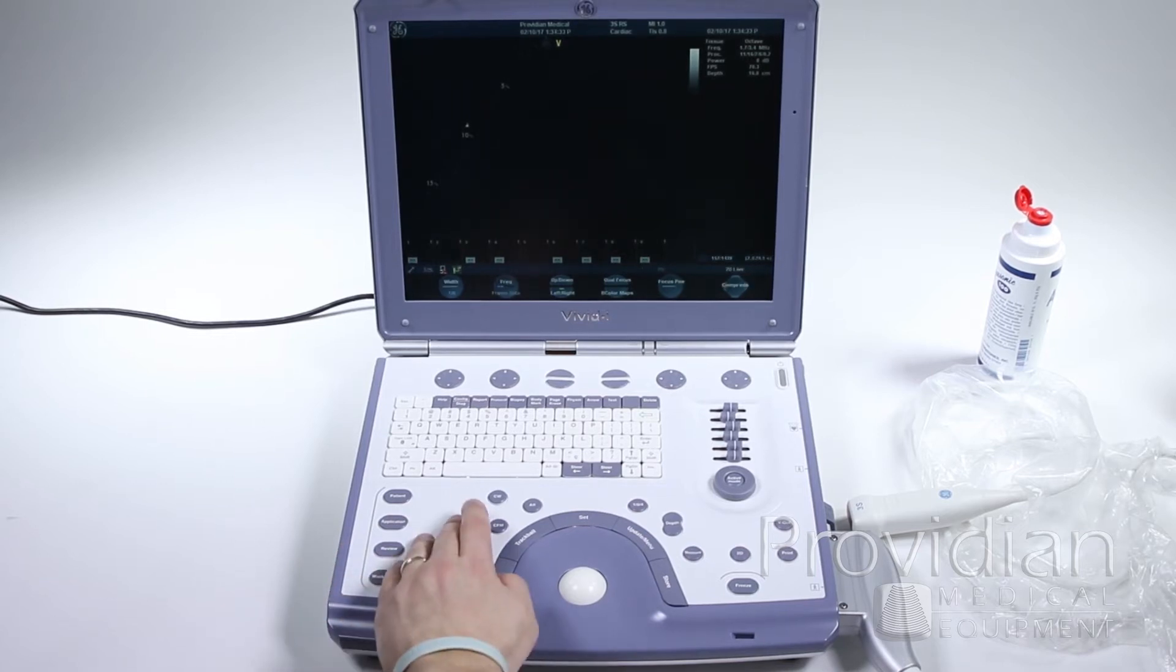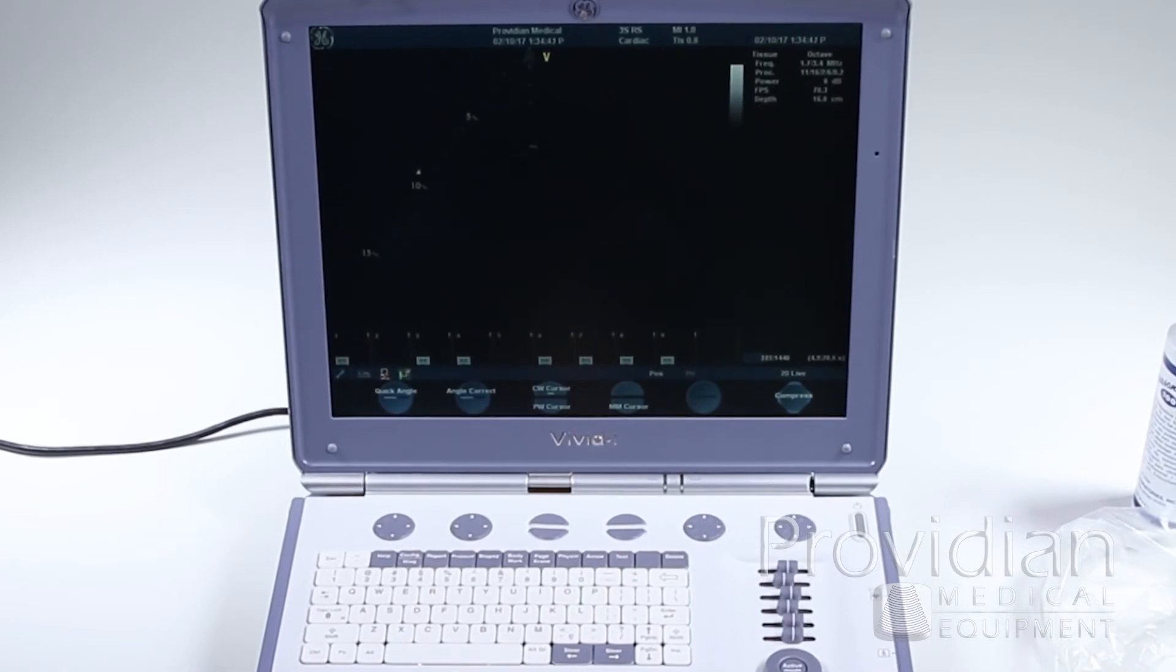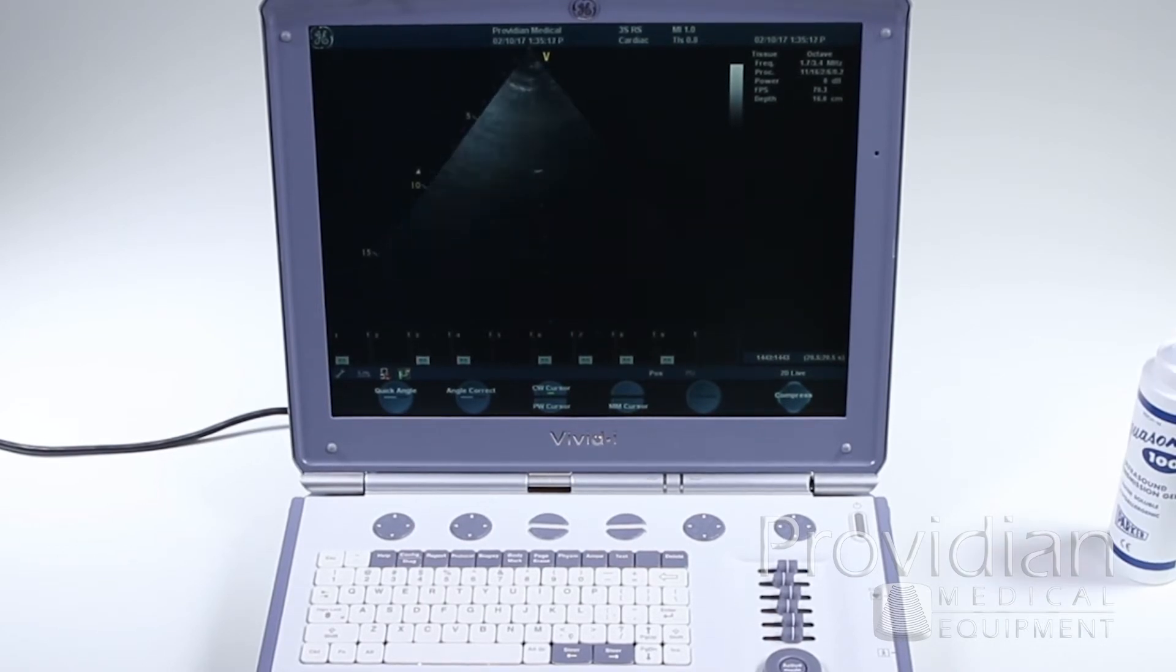A lot of times, instead of hitting pulse wave and then getting the gate and going to that image and going back to 2D, you can click your cursor here. So for M-Mode, PW, or CW Doppler, you can get that full screen on there and decide on where you're going to put that gate.